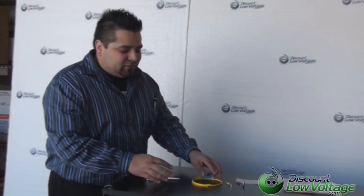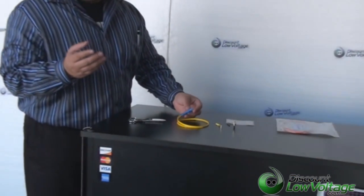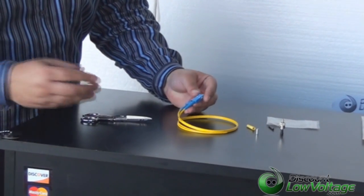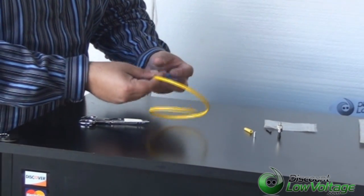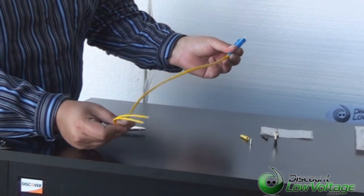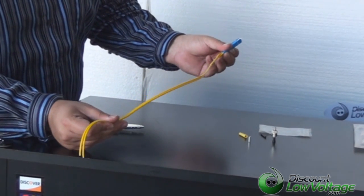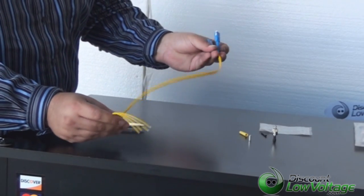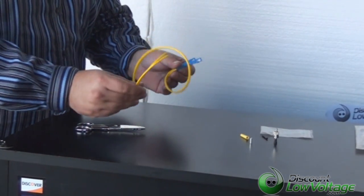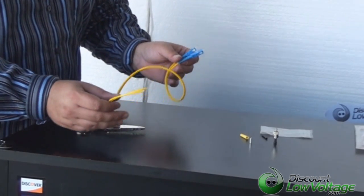Now the problem with those connectors is they're fairly expensive. They're about $10 a piece, maybe $8 or $9 in larger quantities. When you need four total, two on each end, that's $40 cost plus the cost of your zip cable at $0.25 a foot, that's nothing. But it really doesn't make it worth it to make a fiber optic patch cable with those connectors.